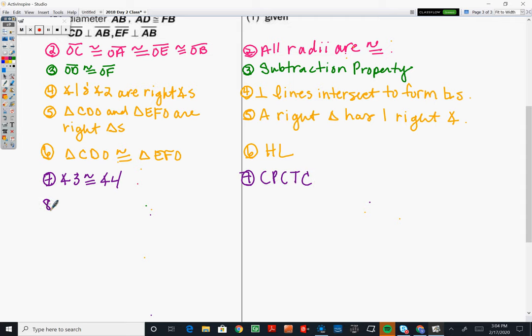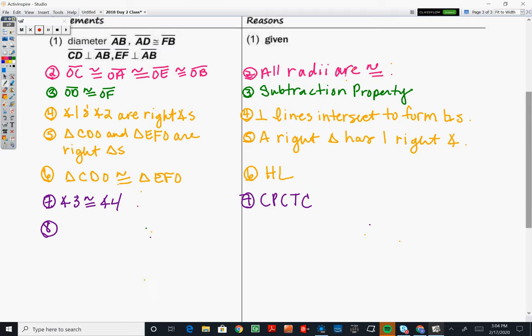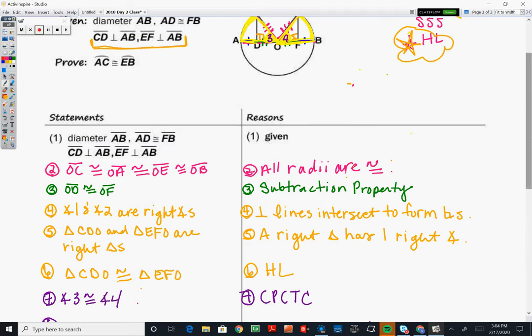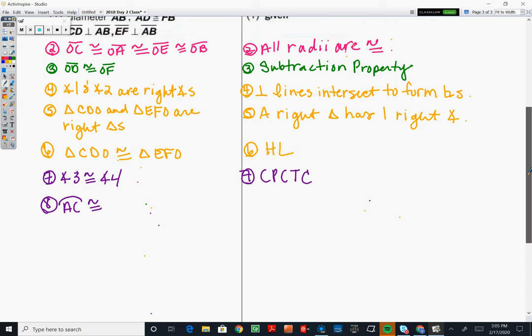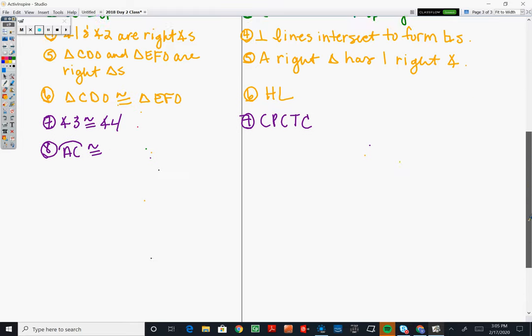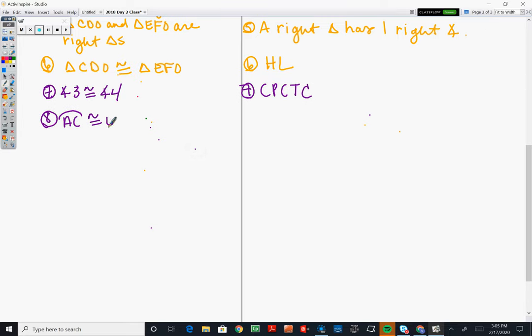And then we're done. Eight, we now have arc AC congruent to arc EB. So remember to put that curve above AC. So arc AC is congruent to arc, was it EB? Yes. So arc EB.